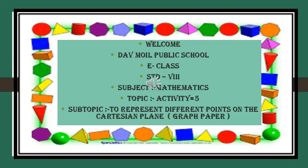Hello students and welcome to DAV Moyle Public School. Let's start our today's mathematics activity of standard 8th. In today's activity we will represent different points on the Cartesian plane. The Cartesian plane means the graph paper and the two axes which cut at the origin — one is vertical and one is horizontal. So let's have fun with the activity.